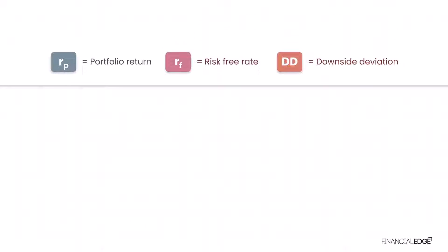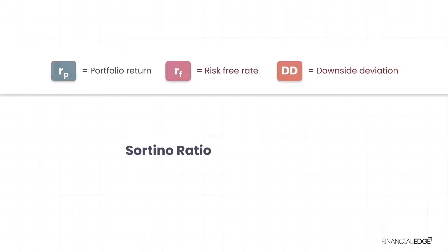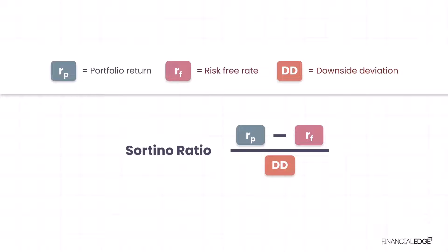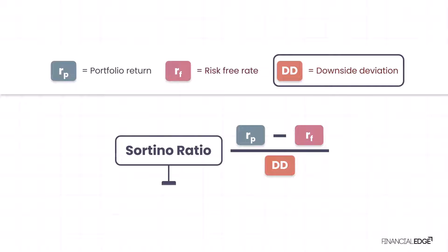Here is the Sortino Ratio formula, which is very similar to the Sharpe Ratio. The numerator is exactly the same — excess returns is the return on the portfolio minus the risk-free rate. But instead of the standard deviation of returns, which we saw in the Sharpe Ratio, we're just using the downside deviation here. The result is interpreted in the same way: the higher the ratio, the more favourable an investment return compared to its relative downside risk.